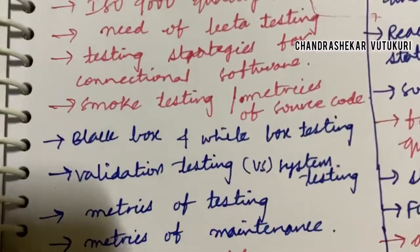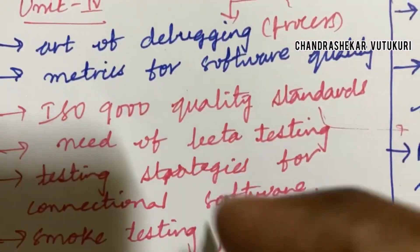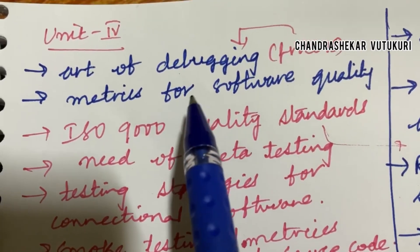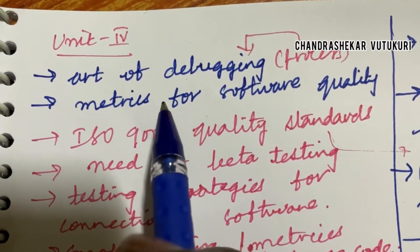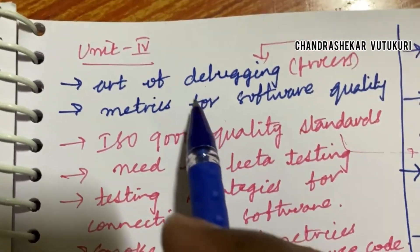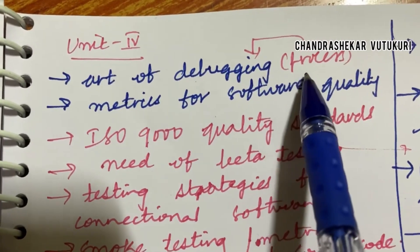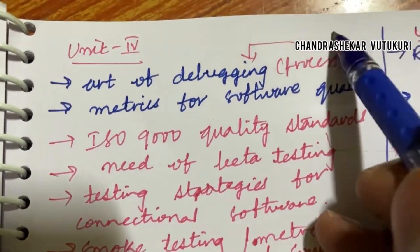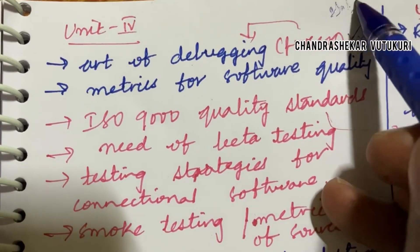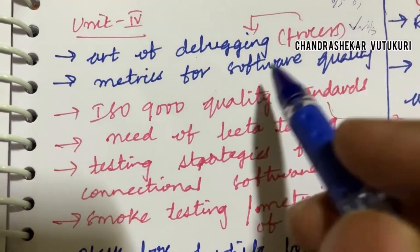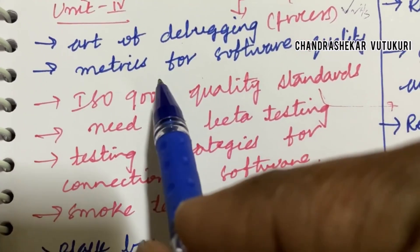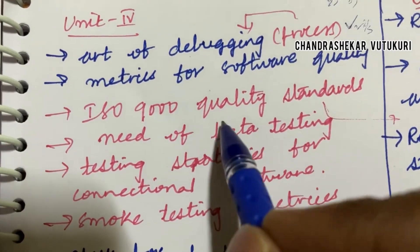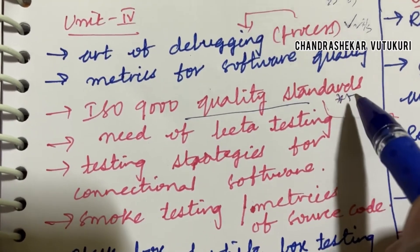Dear students, you can work out Unit 1 first because it's all about the introduction and the basic concepts which you need to know before working out the remaining units. Perform well in Unit 1 as well as Unit 2 in the beginning. The art of debugging and the process of debugging — related two or three mark questions — I'm going to work out for you all. 8A and 8B as well as 9A and 9B: metrics for software quality and ISO 9000 quality standards is said to be a top most question.